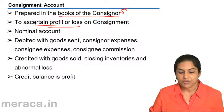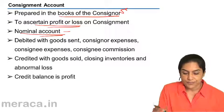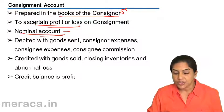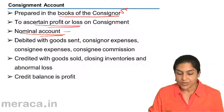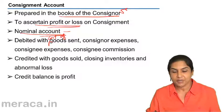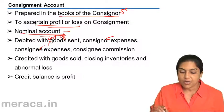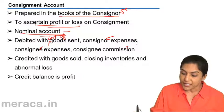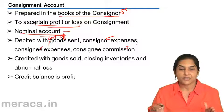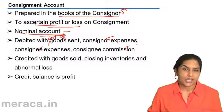Since it is to ascertain profit or loss on consignment, it is a nominal account. The consignment account is debited with the cost of goods sent on consignment and with all expenses incurred either by the consigner or by the consignee. We should not forget the commission which is payable to the consignee. So the consignment account is debited with all the expenses.